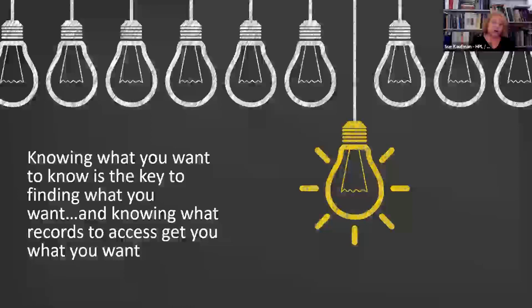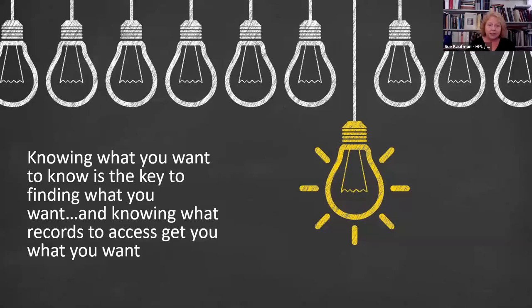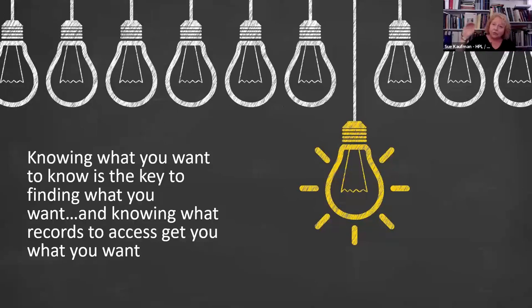Knowing what you want to know is the key to finding out what records to access. Who are they? When did they get married? Who were their parents? Who were their brothers and sisters? That individual level is the key. You want to work on your family history — that's huge — but you need to break it down. It's like an inverted triangle: you have to get down to that point. Once you create all those questions, it makes you feel in control and gives you direction.